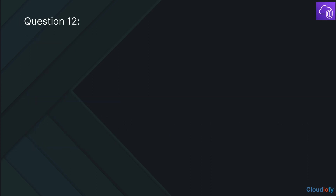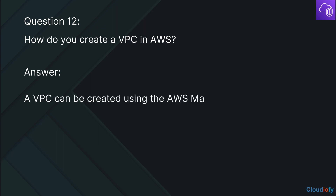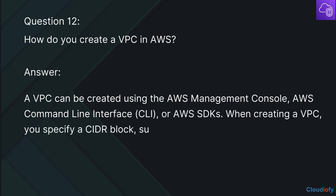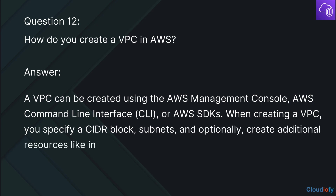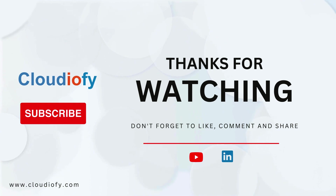The next question is: How do you create a VPC in AWS? A VPC can be created using the AWS Management Console, AWS Command Line Interface, or AWS SDKs. When creating a VPC, you specify a CIDR block, subnets, and optionally create additional resources like internet gateways and route tables. Thank you for exploring AWS VPC interview questions and answers with me.